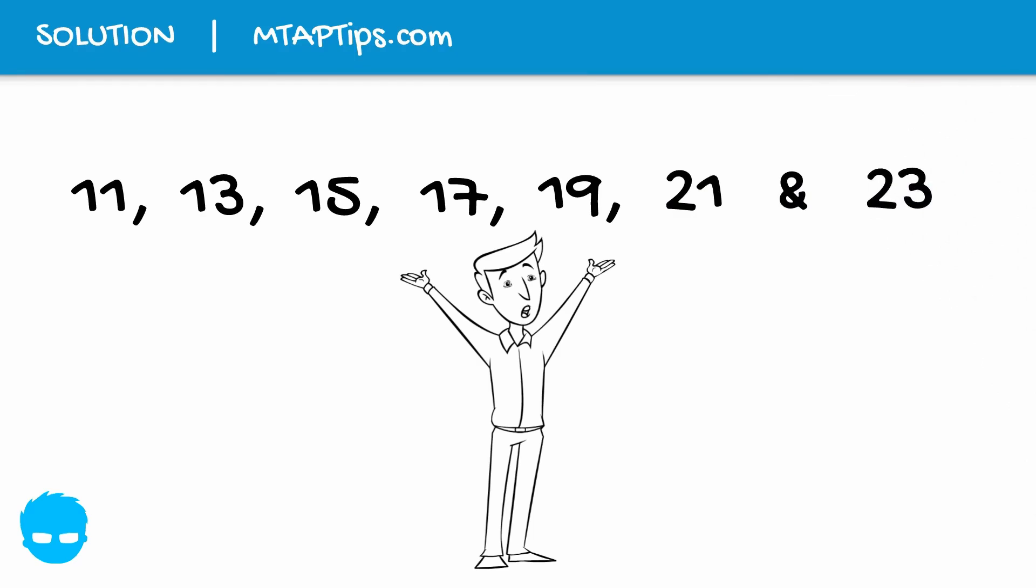Now we have to find the sum of these numbers. If you are good in addition, you can just simply add 11 plus 13 plus 15 plus 17 and so on.